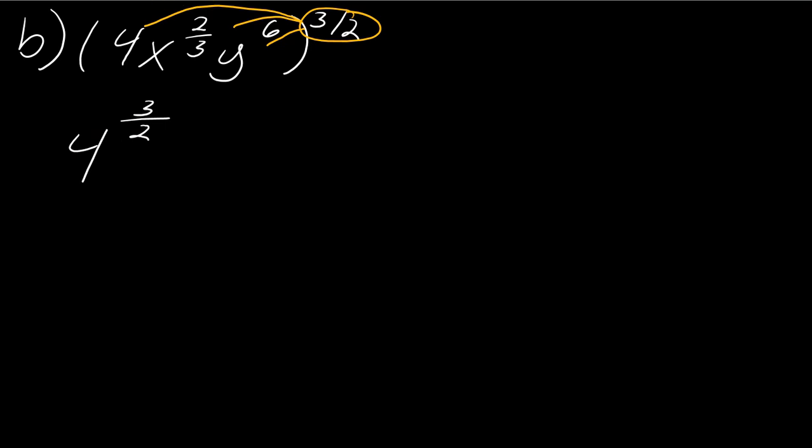And then for these other two variables with these exponents, I need to multiply. So this will be x to the 2 thirds, that's a terrible looking three, times 3 halves. And this will be y to the 6 times 3 halves. And now you see why we did that little review on working with fractions, just so that we're kind of fresh on it. Okay, so 4 to the 3 halves. I take the square root of 4, which is 2. 2 cubed is 8. So this is 8.